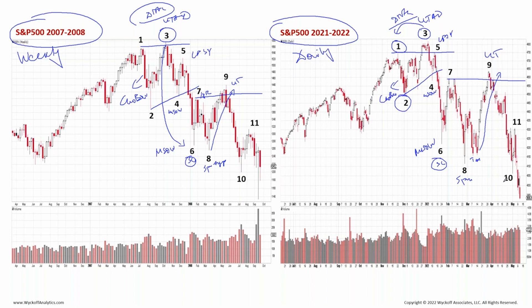Bruce was asking me last week what kind of phase we are in, and I kind of spaced out a little bit. I was thinking about this day and night — and now I'm going to answer it. I believe we are in Phase D or Phase E of the continuation to the downside. The reason I was pausing is because I was thinking about two analogs.